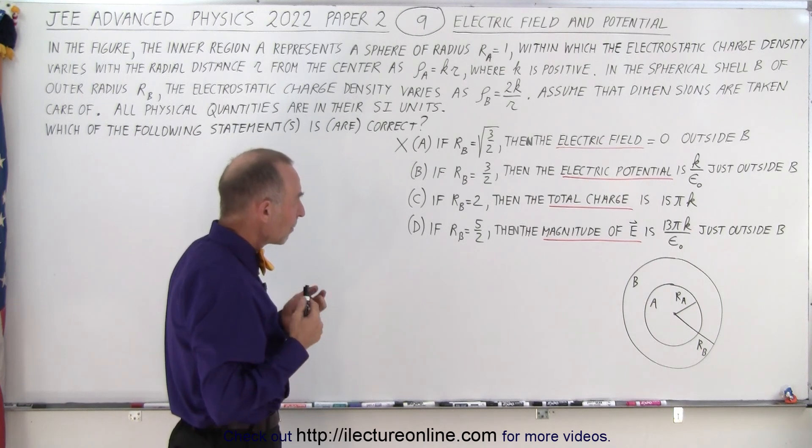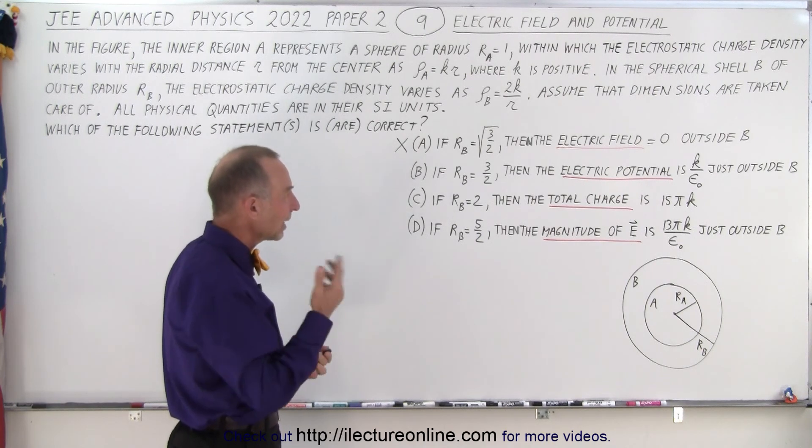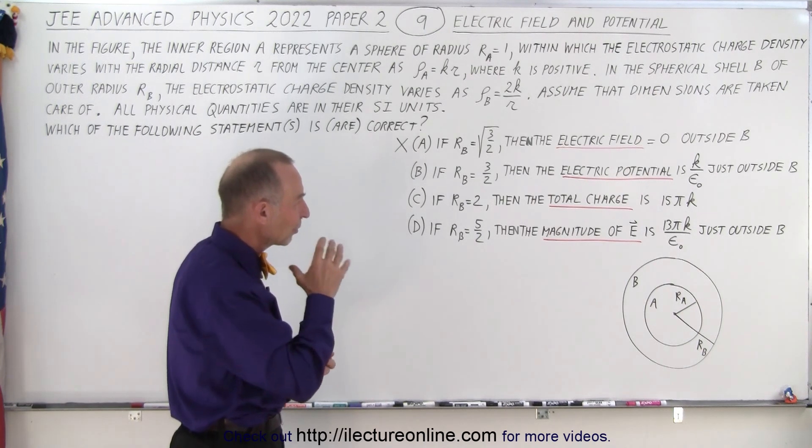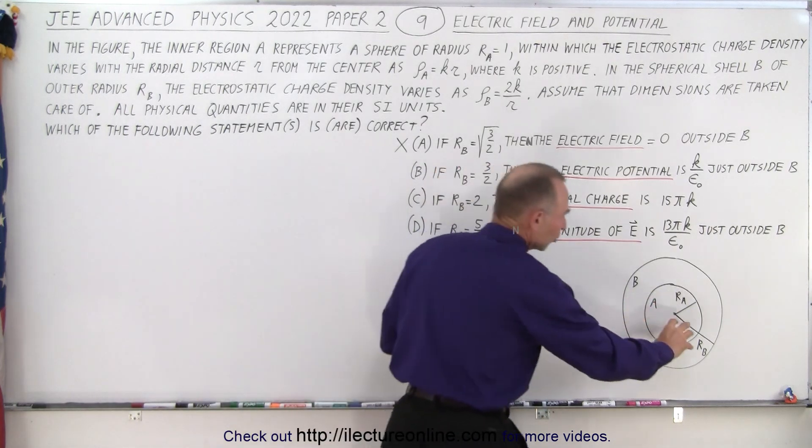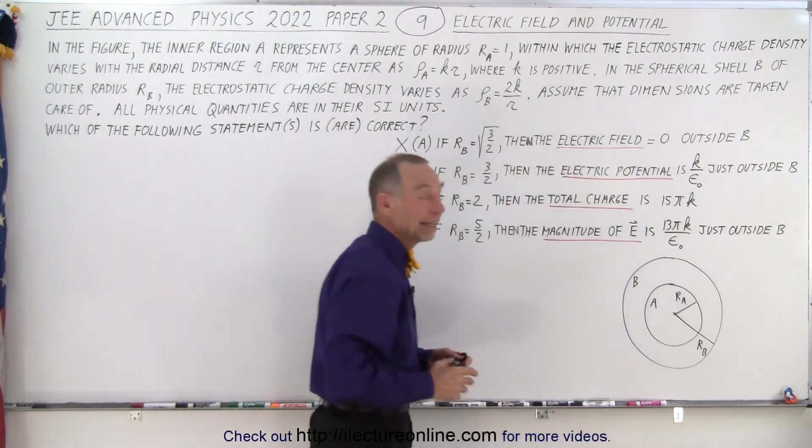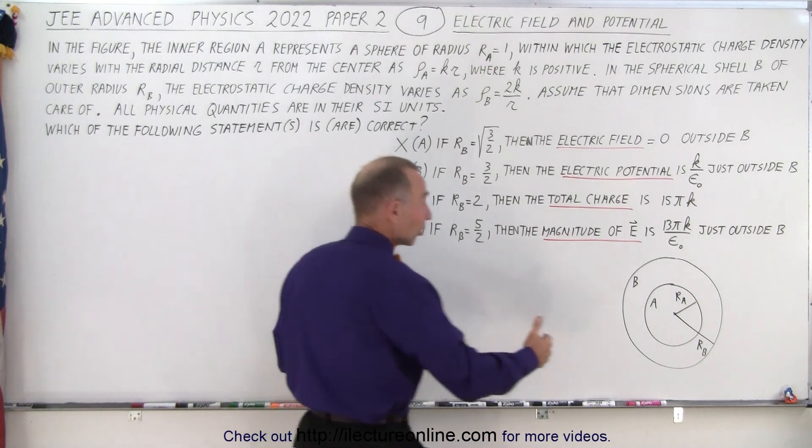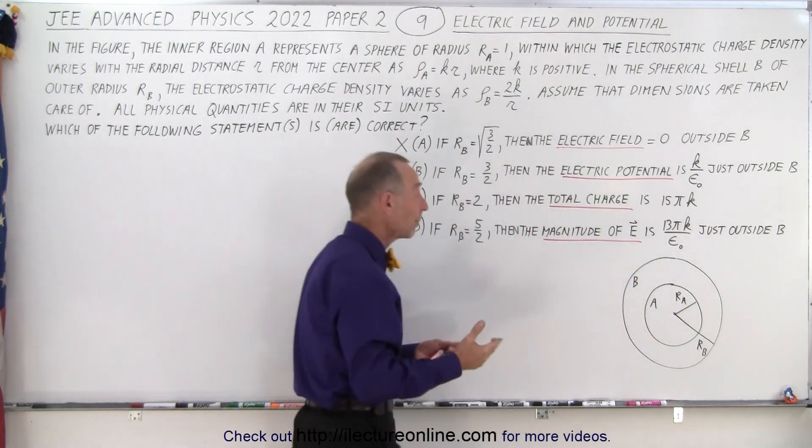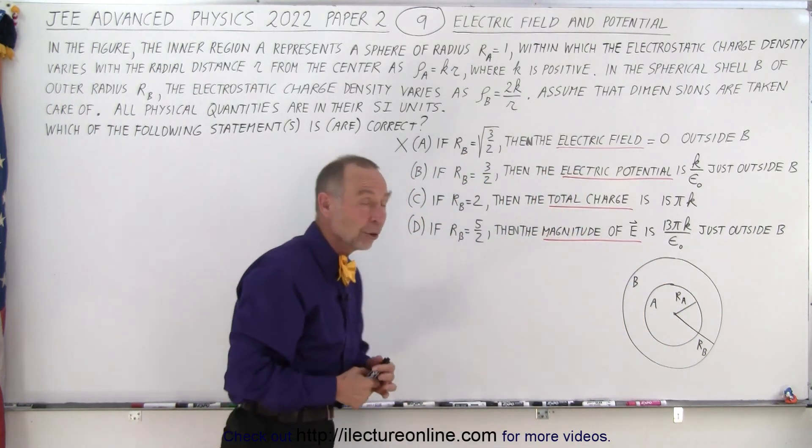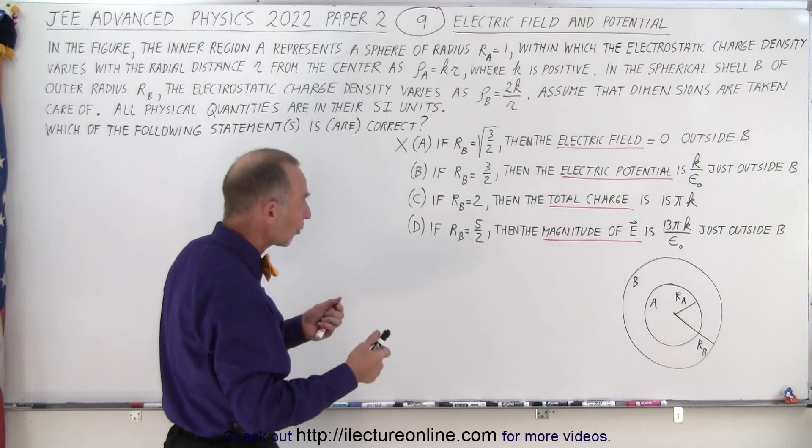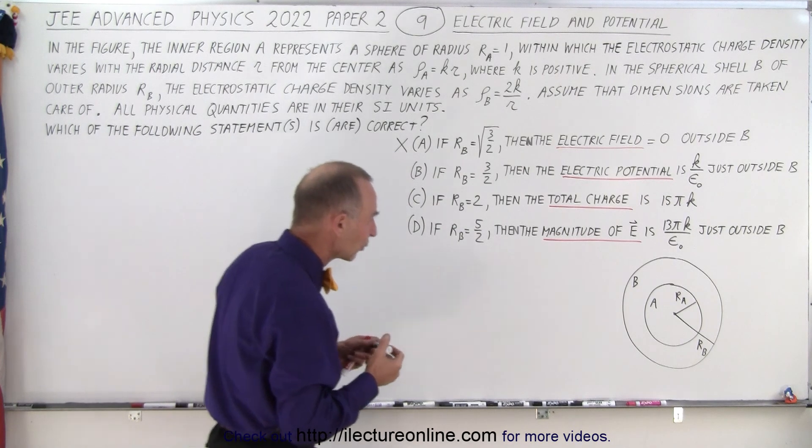What about B, C, and D? Well, the next thing we need to do is figure out how much charge there is in A, and then we may need to find out how much charge there is in B, and do that separately for three different radii. So let's first find the charge inside A.